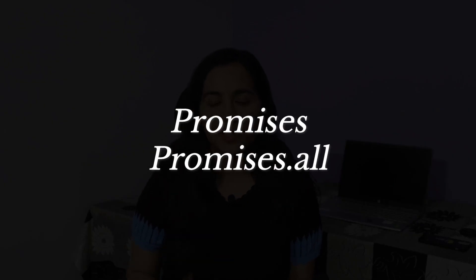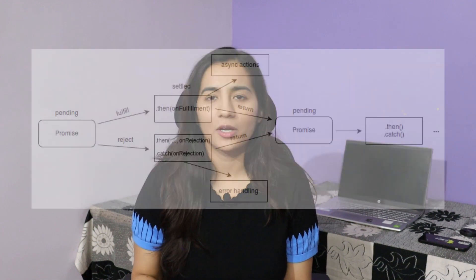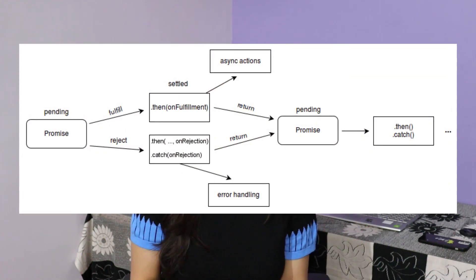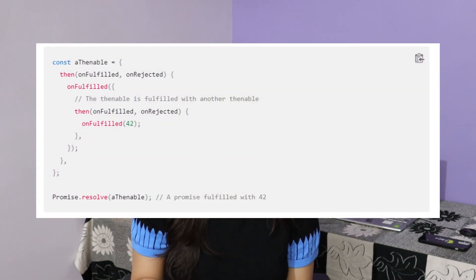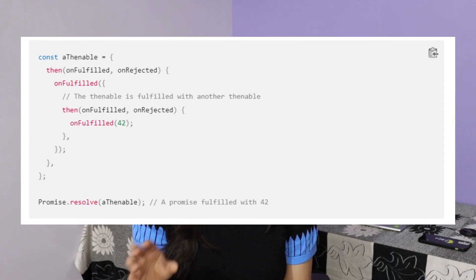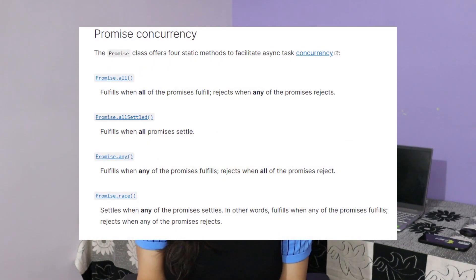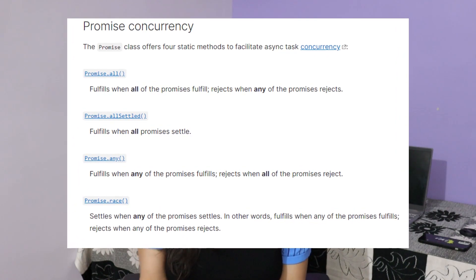Our next topic is promises. When asked in an interview, your first response should be that a promise will deliver a result that is pending, resolved, or rejected. You can also write it as code. After explaining promises, you can be asked about Promise.all and when to use it, including its advantages and disadvantages. I think you can also learn from the documentation.